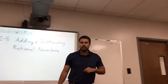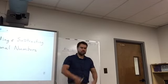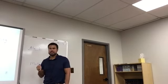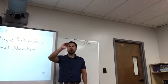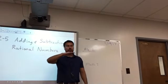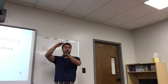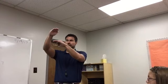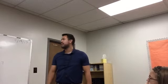Who remembers from yesterday what a rational number is? Remember, there are specific parts we have to identify — it's not just one statement, it's several different parts. A number that can be written in the form A over B, where the denominator B cannot equal zero, and A and B have to be integers. So a rational number is any number that can be written in the form A over B, where A and B are integers and B cannot be zero.